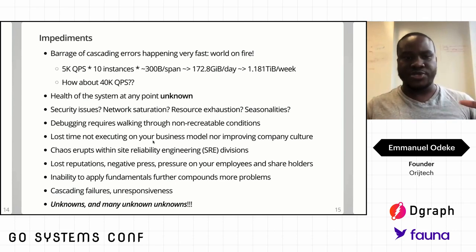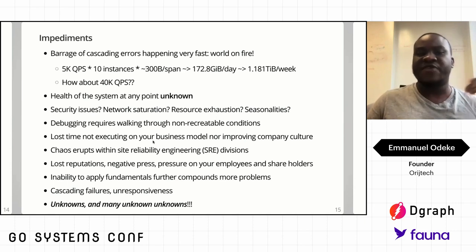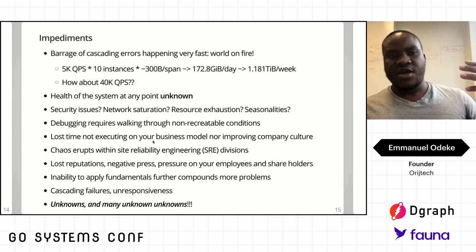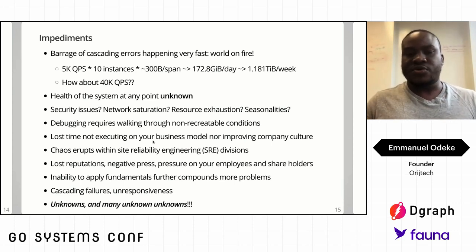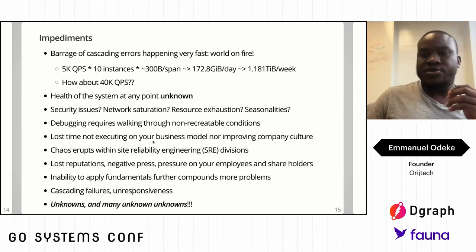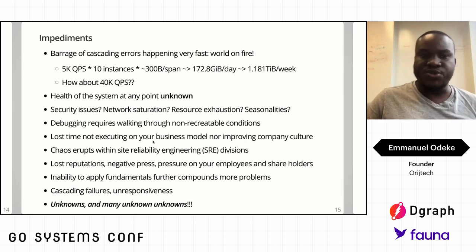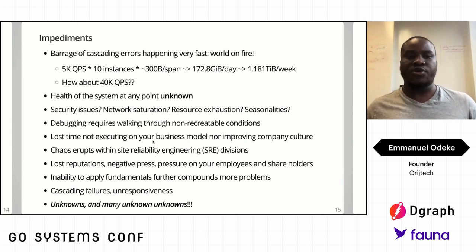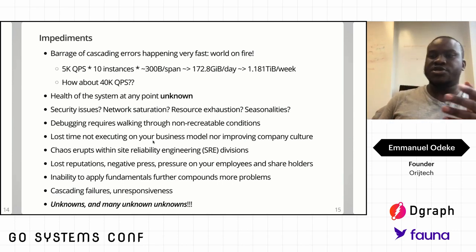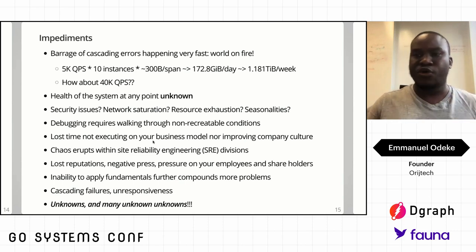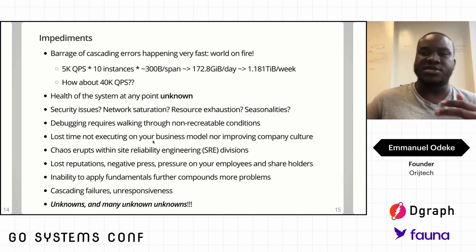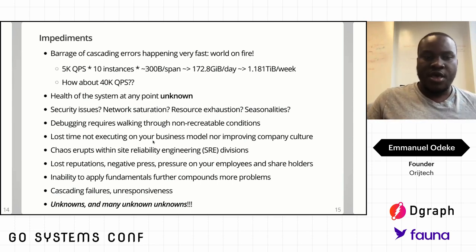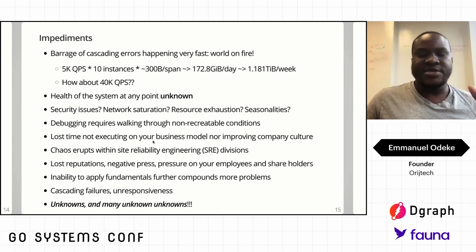Coming back to the conceptual problems: you could get a barrage of cascading failures happening very fast. If you have a modest service with 5,000 people using your photo app, scaled over 10 instances, in a week that could produce almost 1.2 terabytes of data from spans alone. What happens when your service hits 40,000 QPS? That value just blows up. At any point you don't know the health of your system — security issues, network saturation, resource saturation, running out of file descriptors? Could it be a seasonal problem — Thanksgiving, St. Patrick's Day — everyone ordering Uber or Lyft at once?